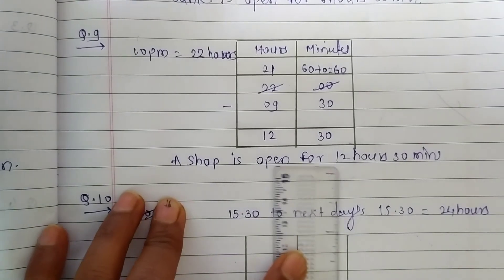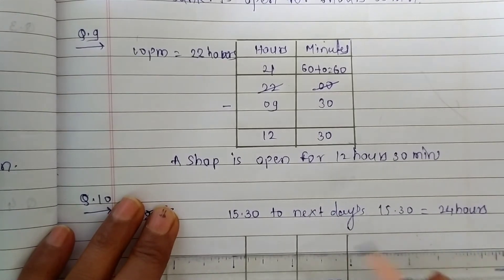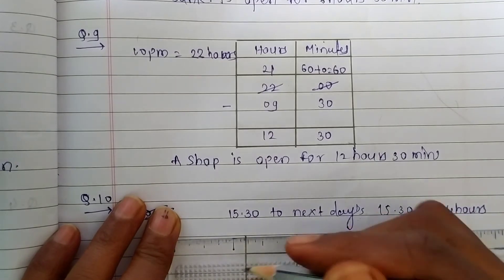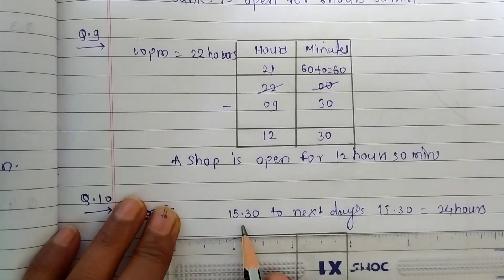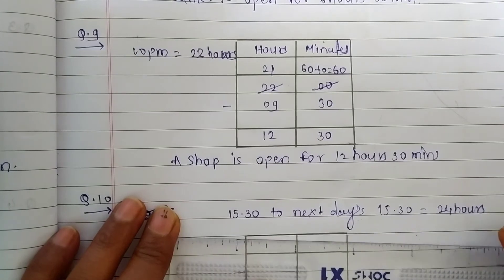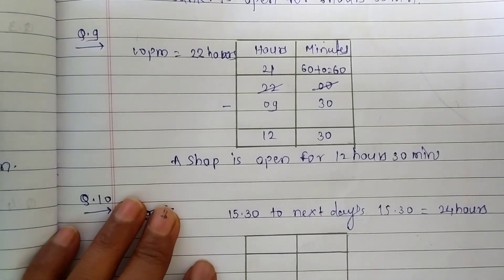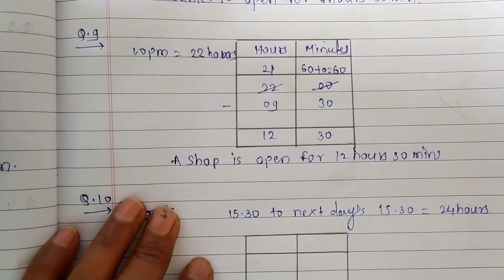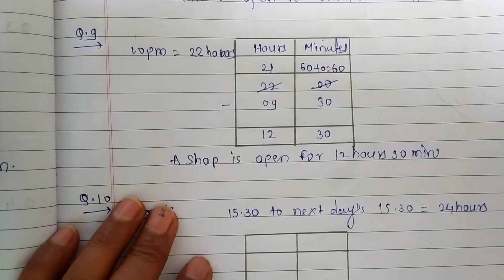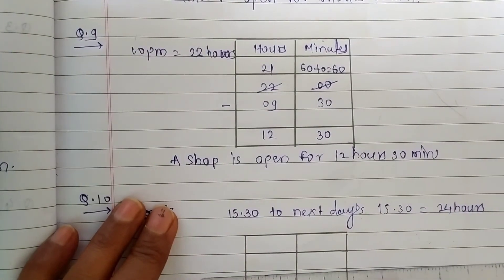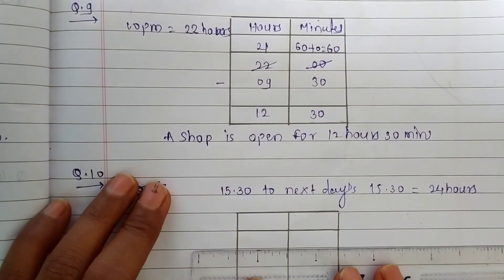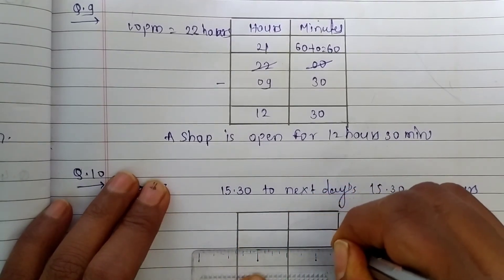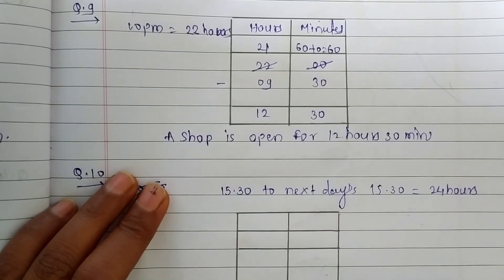Express arrives at Gondhia on the next day. So, we calculate it like this: 15:30 to next day it's 15:30. There are 24 hours and remaining hours will be calculated now by subtracting. The problem is of subtraction. So, we are going to make an extra column on upper side.